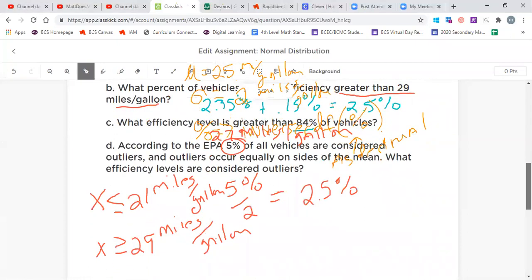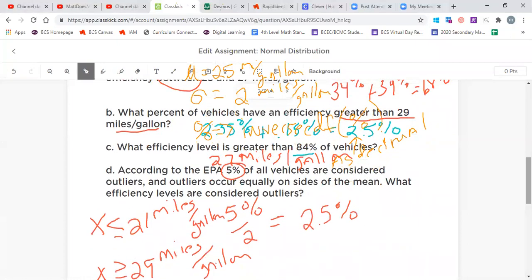The last one is also an inverse. According to the EPA, five percent of all vehicles are considered outliers, and outliers occur equally on the sides of the mean. What efficiency levels are considered outliers? So when we did this original problem we said that means 2.5 percent are outliers that are above the mean and there's 2.5 percent that are outliers below the mean. So we just have to figure out those levels.